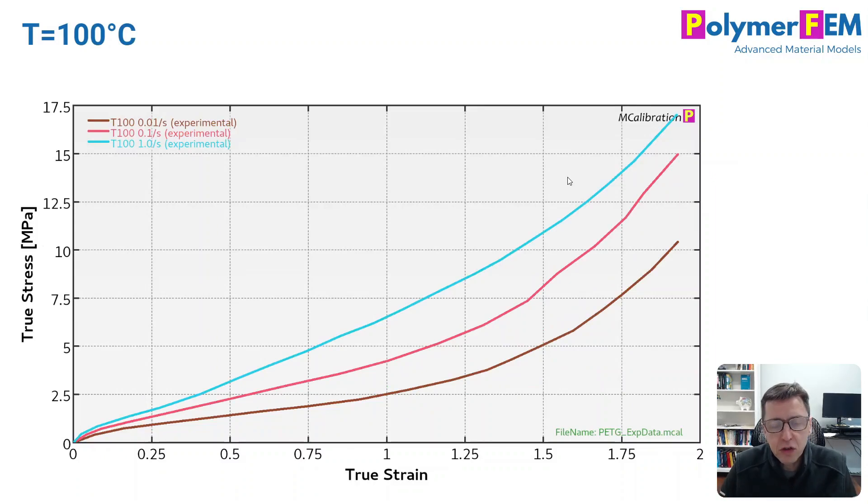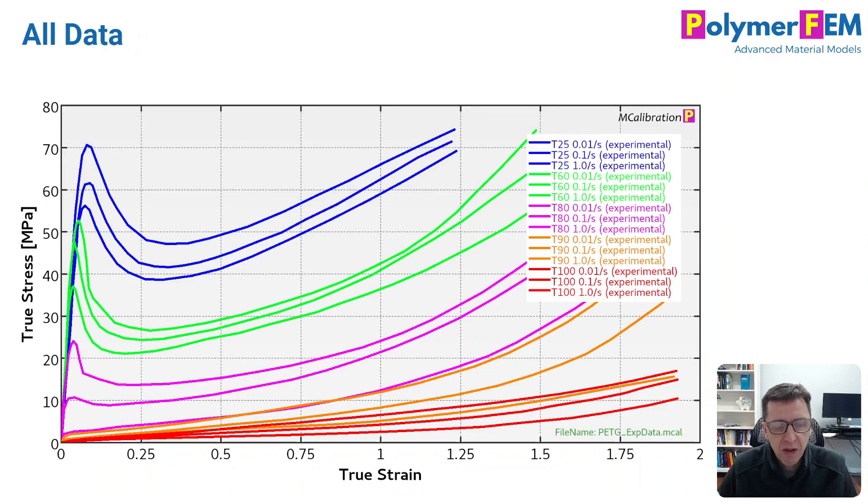Here's the 100 degrees C response. My goal here is to show you how you can simulate this response of all these curves, all of these temperatures at once. Here is just a figure to illustrate just how complicated this material response is. All the temperatures, all the strain rates, it's all over the place as you can see. So how do we do this?